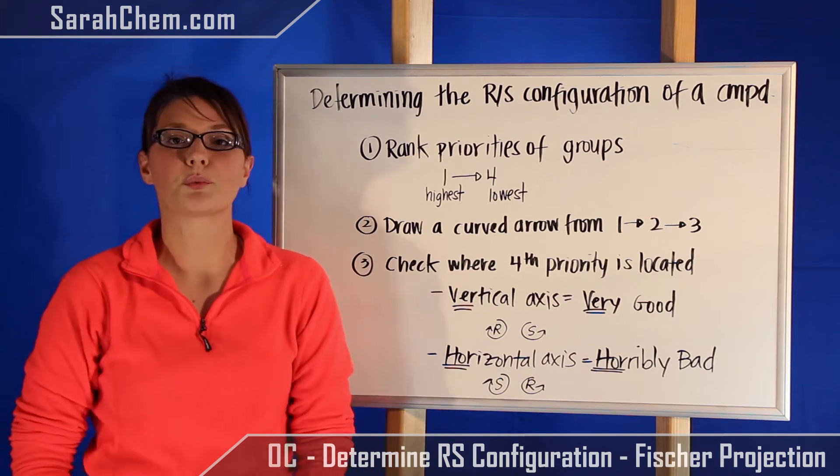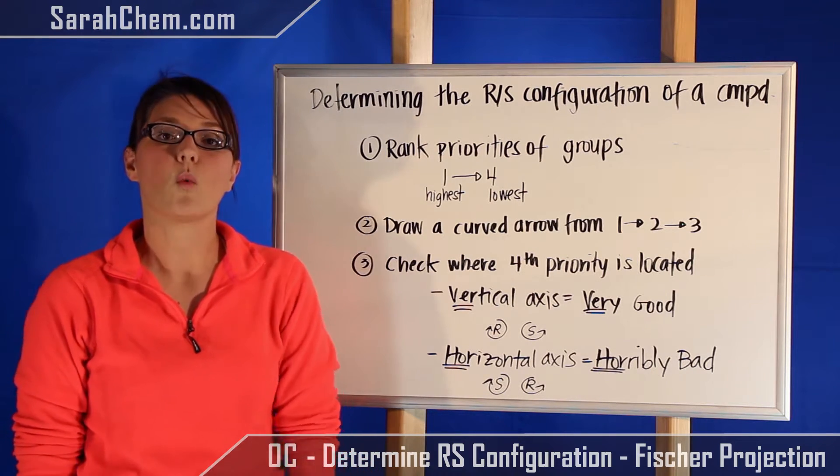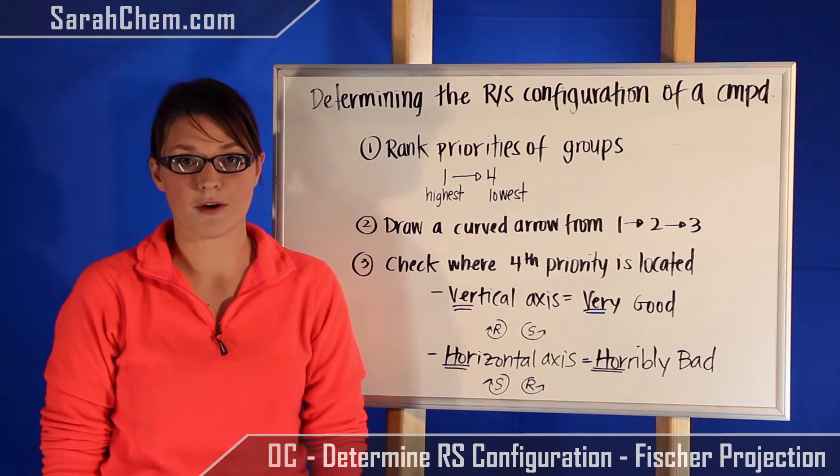So the first thing I want to do is just cover the guidelines and then we'll do an example. So we look at them, the first one is to rank the priorities of the groups, one being the highest priority, four being the lowest priority.